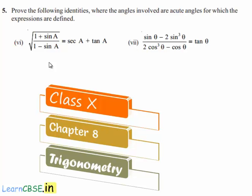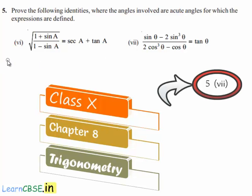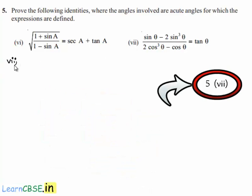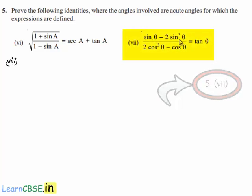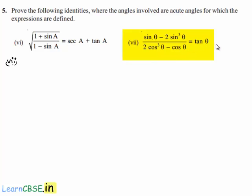Moving on to the seventh bit of the fifth problem, we are asked to prove that (sin θ - 2sin³θ) / (2cos³θ - cos θ) is equal to tan θ.